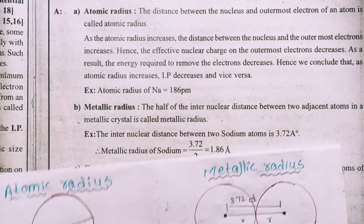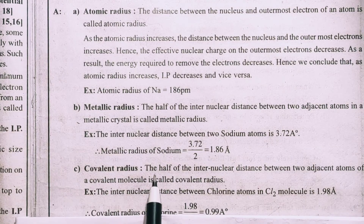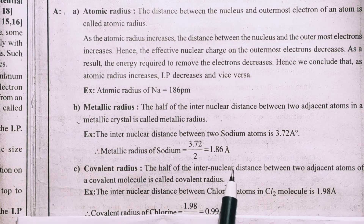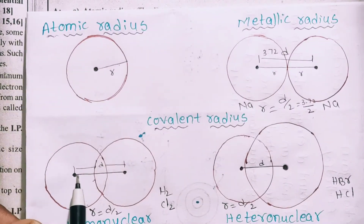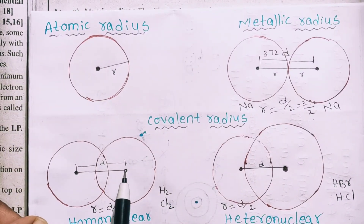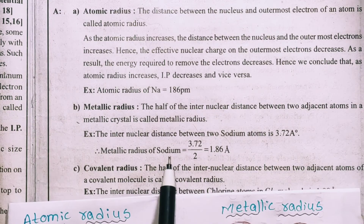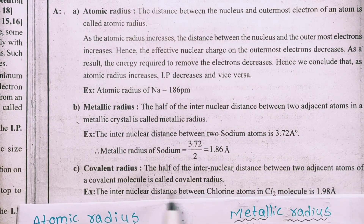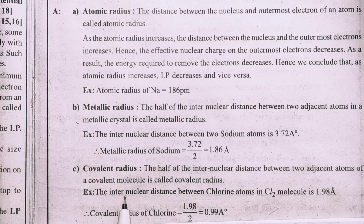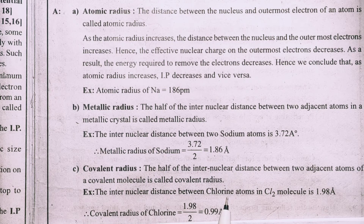So covalent radius is the half of the internucleus distance between two adjacent atoms of a covalent molecule. For example, the internucleus distance between chlorine atoms in the Cl₂ molecule gives the covalent radius.